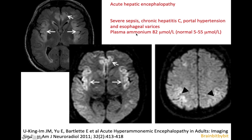In this patient with clinical and laboratory signs of liver failure with high ammonium, you can see cortical hyperintensity with restricted diffusion in the cingulate and insular region. Usually the central and occipital regions are spared in acute hepatic encephalopathy.